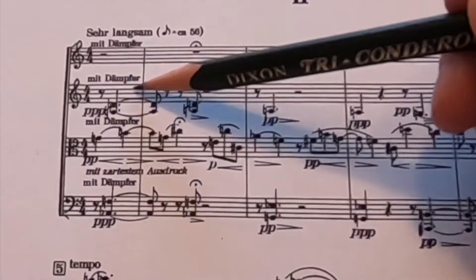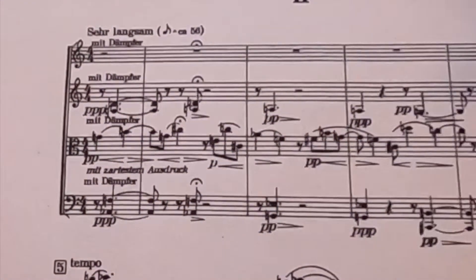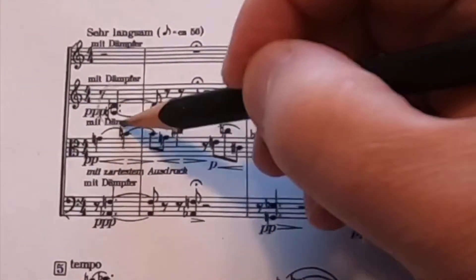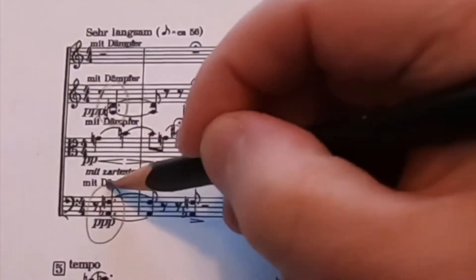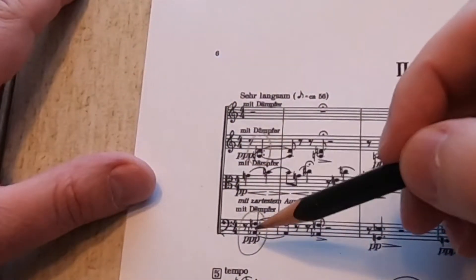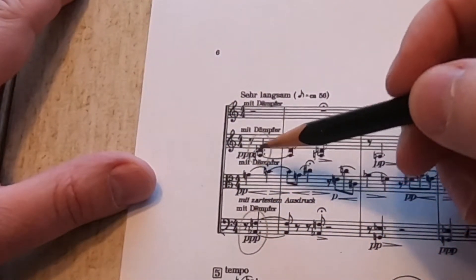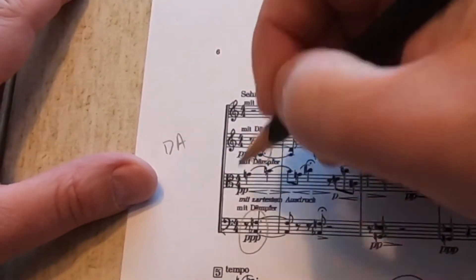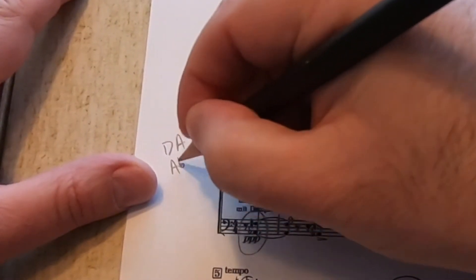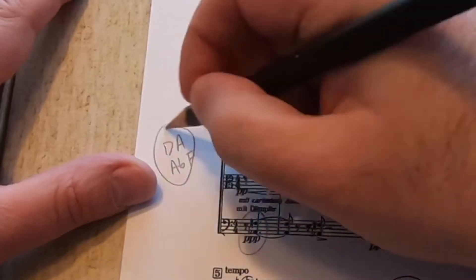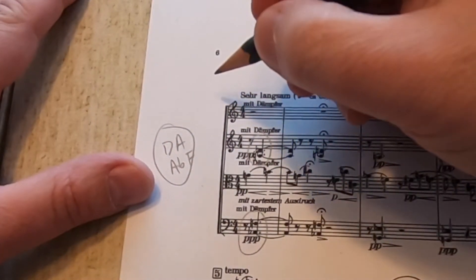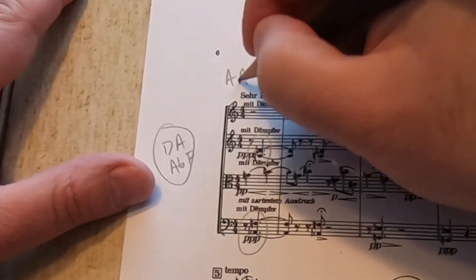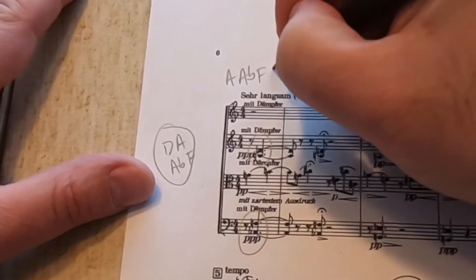So to begin with, if we look at the first chord, or sonority, that occurs at the beginning of the piece, it occurs between the second violin and the cello. If we collect the notes for the second violin and cello, you'll notice that we have the notes D and A in the second violin, and in the cello we have A flat and F. So what we have to do is get that into the smallest possible space. If we do, we end up with A, A flat, F, and D.